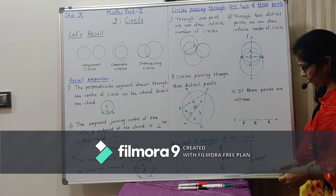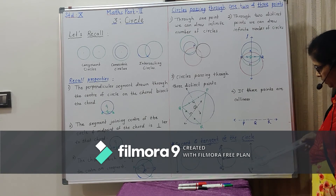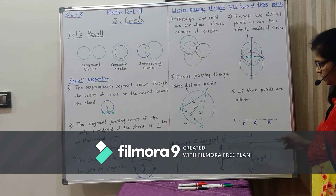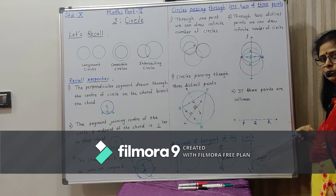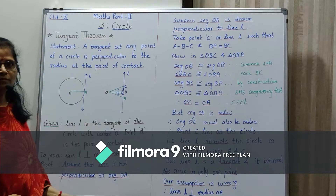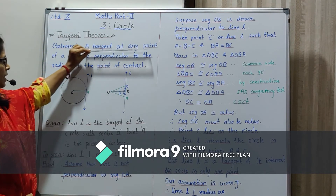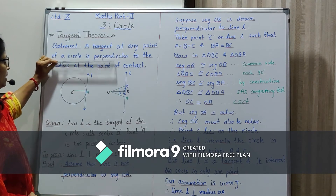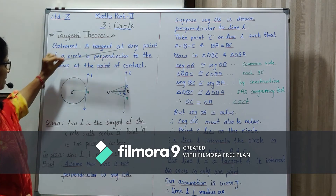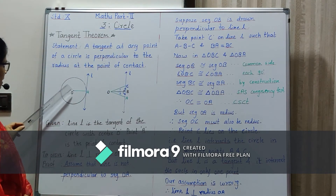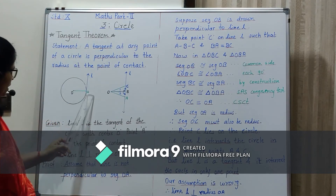In the second case, the line PQ is called a secant of the circle. In the third case, line L is called a tangent of the circle; it touches at point P, and P is called the point of contact. We have an important theorem — the tangent theorem. Statement: A tangent at any point of a circle is perpendicular to the radius at the point of contact.